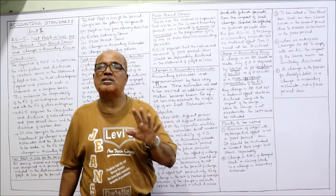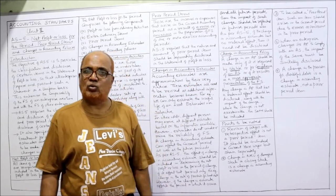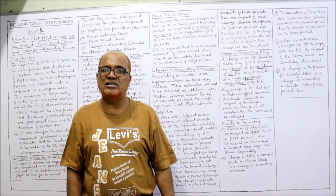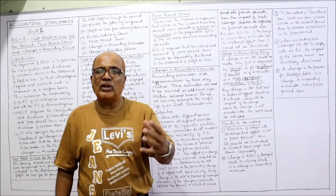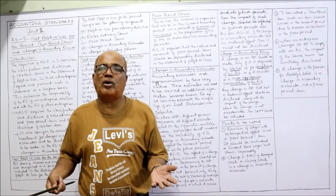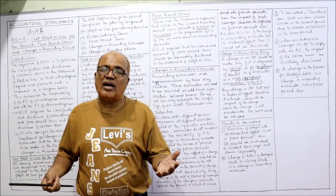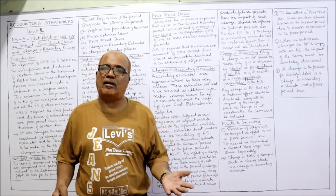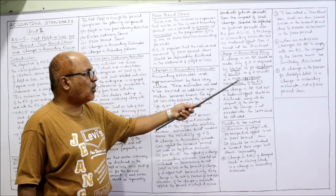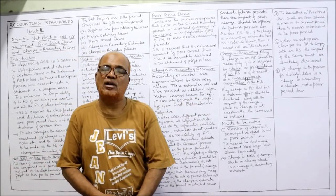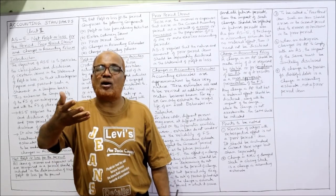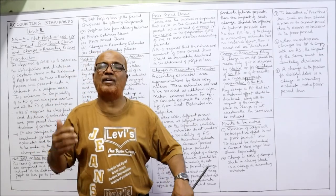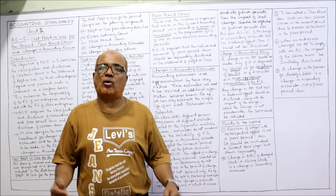The second circumstance for changing accounting policy is for compliance with an accounting standard — if a new accounting standard has been released and its implementation requires a change in accounting policy. The third circumstance is if the change results in a more appropriate presentation of financial statements — if management thinks a changed policy will produce better, truer, and fairer financial statements, then the business can change the accounting policy.